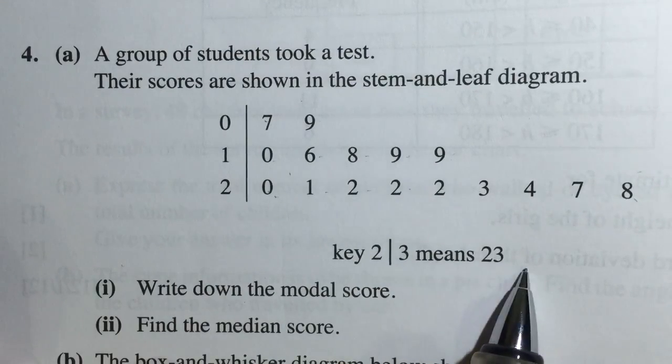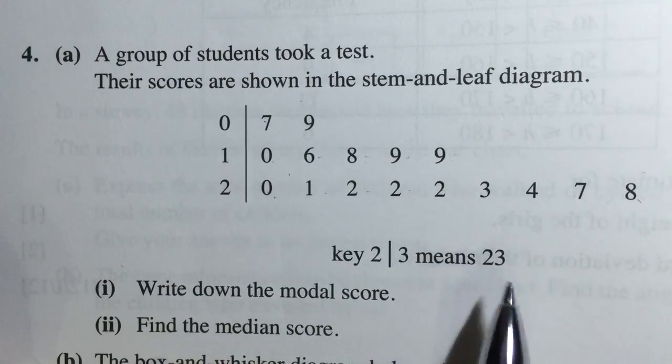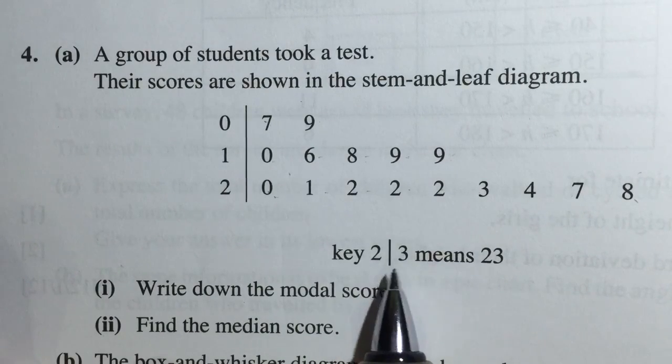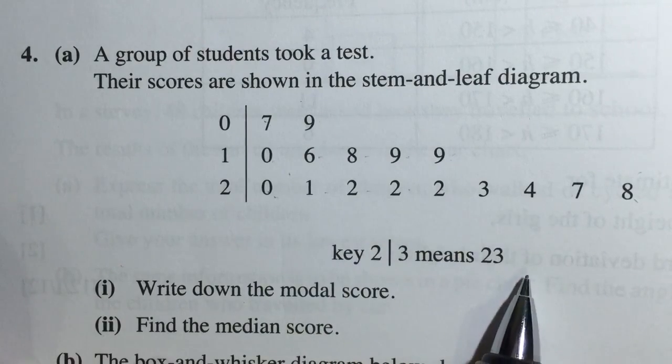So 2 slash 3 means 23. Be careful, you need to understand that it is 23. Now sometimes 2 slash 3 means 2.3, so be careful. The legend is very important.